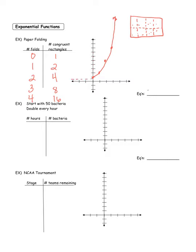Now the equation: it's a y-equals equation. This is a pattern of repeated multiplication. At one fold it's 2 to the first power; multiply by two again to get 2 to the second power; multiply again to get 2 to the third power; and 2 to the fourth power. So the pattern is 2 to the x power. That's what an exponential equation looks like.